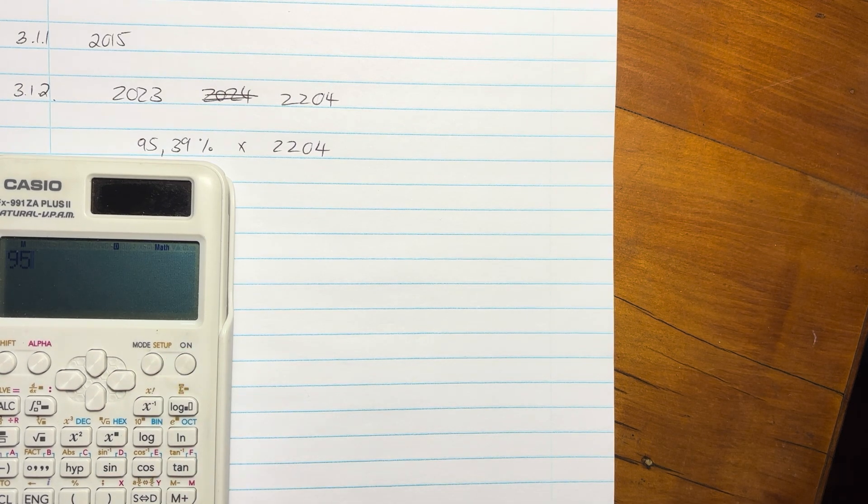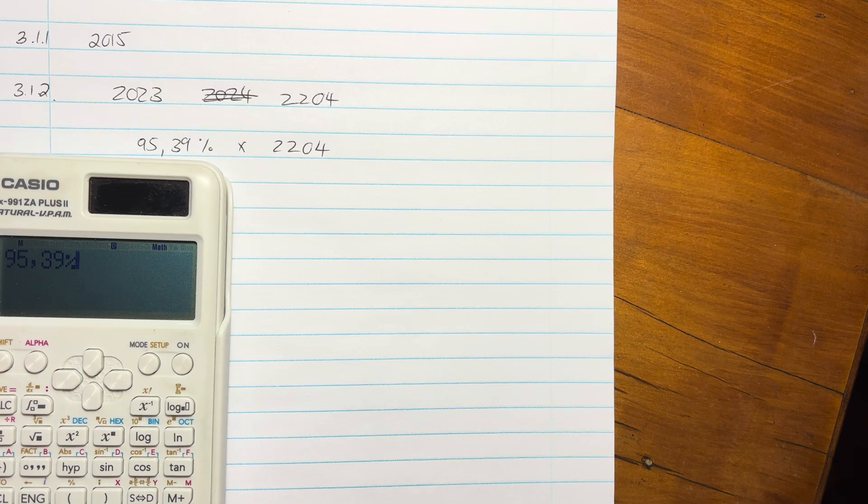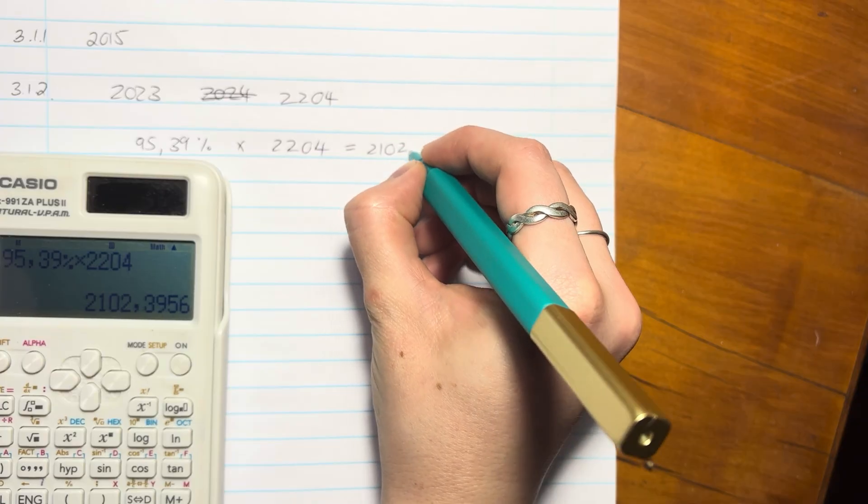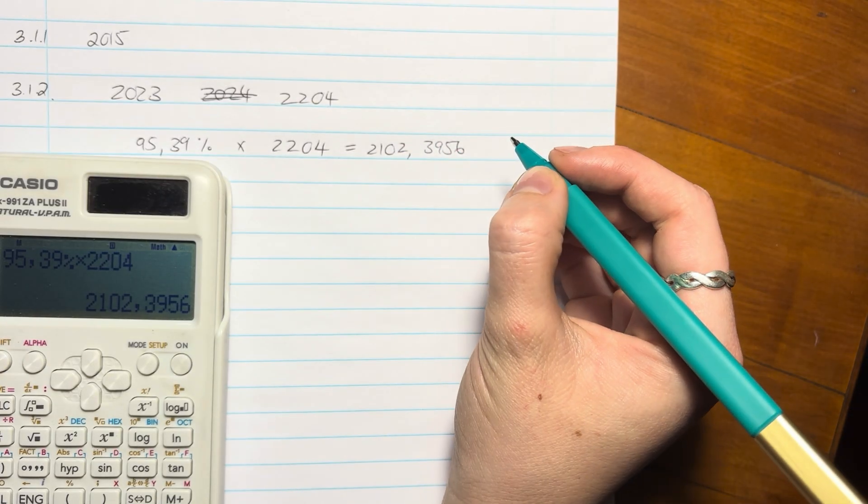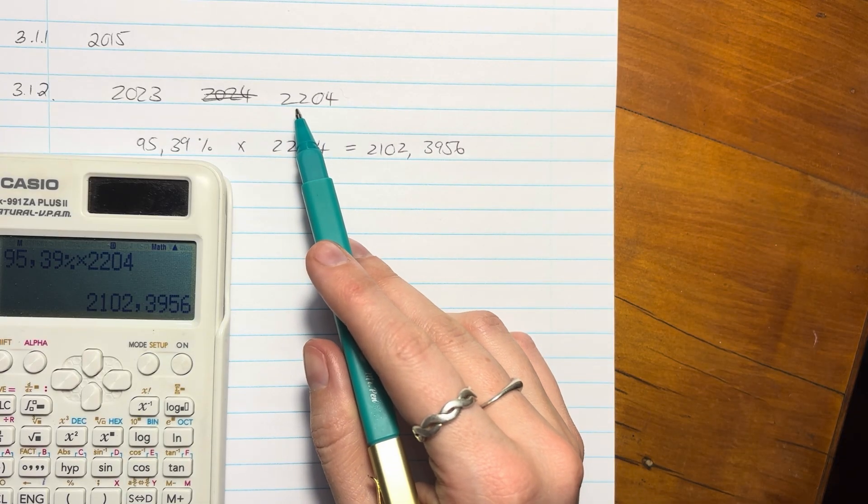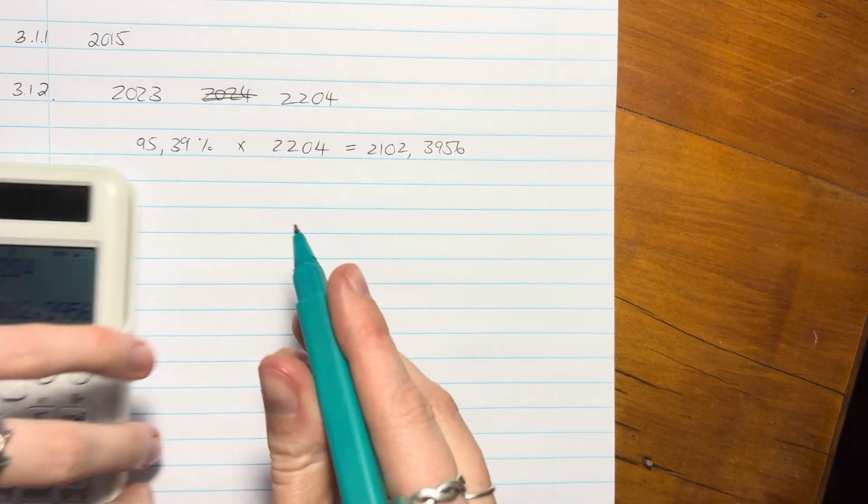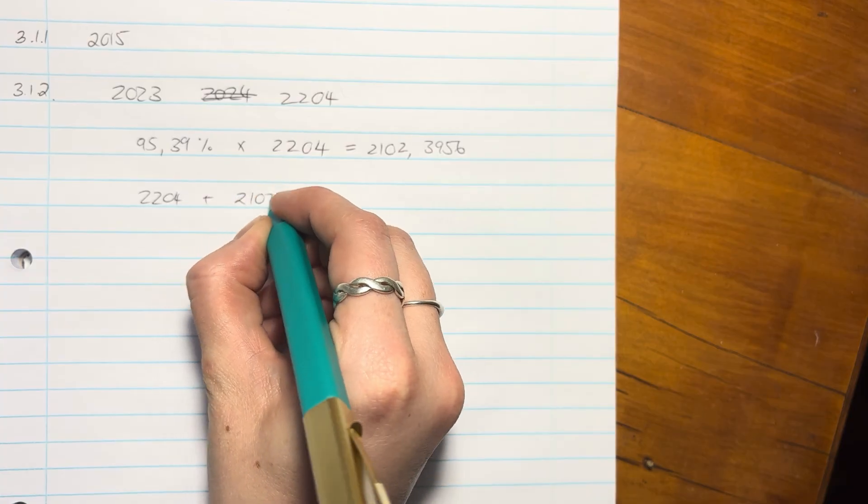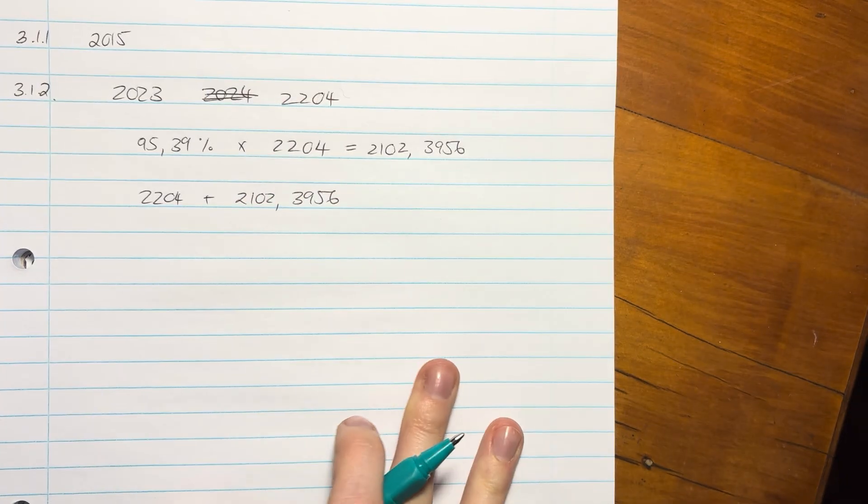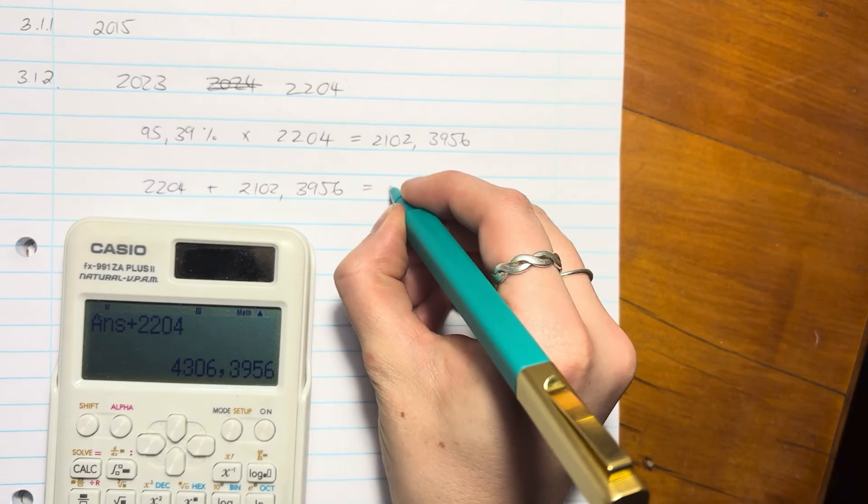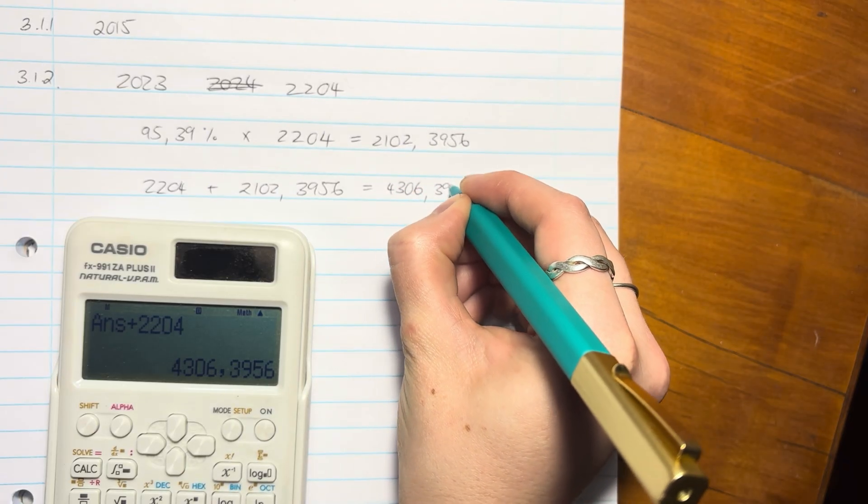So we're going to say 95.39% times 2204. Make sure you type that in correctly. And that's 2102.3956. So that's how much it's going to increase. That's just the 95%. But it starts with the 2204. So you have to add those two together. So you have to say 2204 add 2102.3956. I'm going to add those two together. And your answer is going to be 4306.3956.